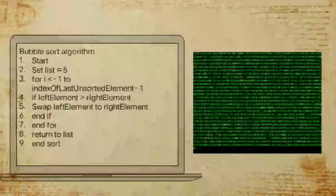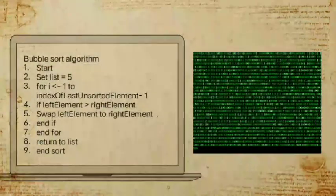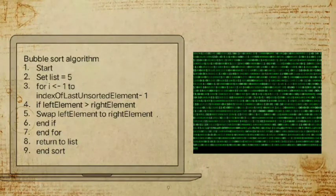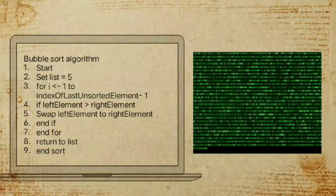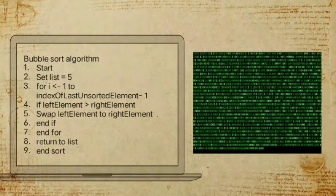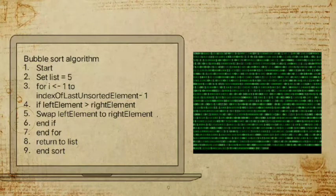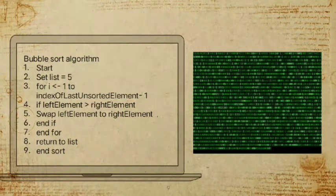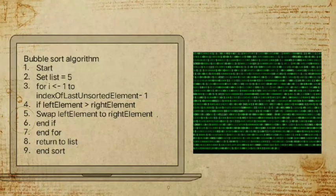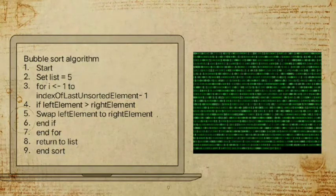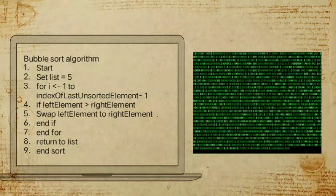Here is our algorithm. Start; set list number of elements equals 5; for i less than n minus 1 down to the index of the last unsorted element minus 1; if the left element is greater than the right element, swap them. The process continues until the last element, returning the sorted list of array elements, then end.